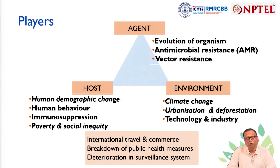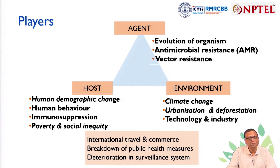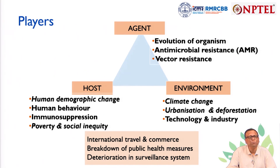Then comes the host factor, referring to humans, where human demographic changes matter greatly. Human behavior, immunosuppression, poverty, and social inequity are all host components. For example, in areas with more aged people, chances of infection increase, though prior exposure may provide circulating antibodies. Immunocompromised people are more vulnerable to various infections and are affected much more than normal healthy people.